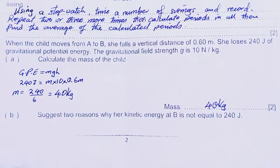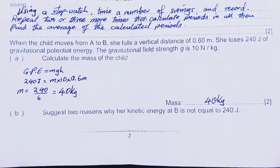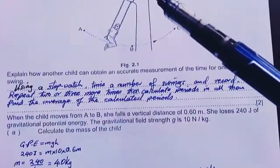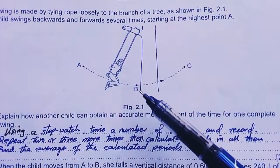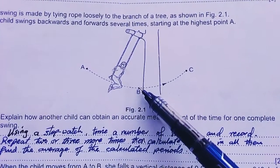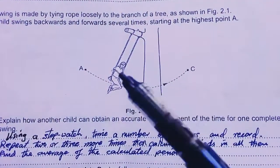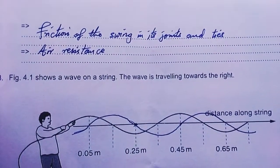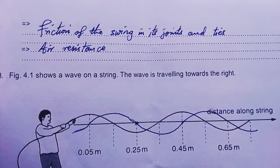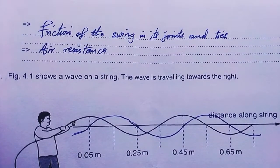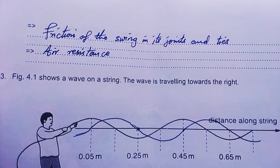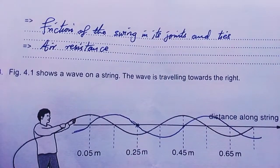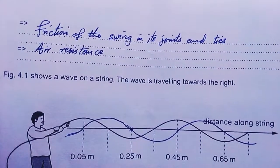Suggest two reasons why the kinetic energy at B is not equal to 240 joules. We all know the law of energy conservation, but suggest two reasons why the kinetic energy may not be equal to the potential energy she would lose. Among my answers was friction of the swing in its joints and ties. Therefore friction can cause the swing not to be at the speed that it's supposed to be at point B. Therefore the higher the speed, the higher the kinetic energy. Then B, air resistance. Those were the two answers right there.